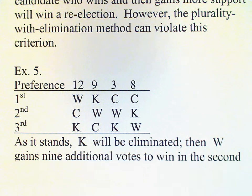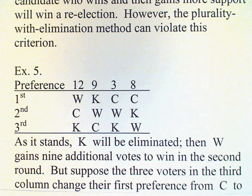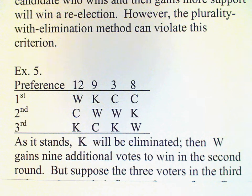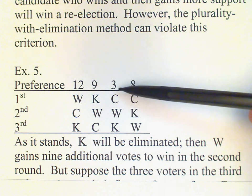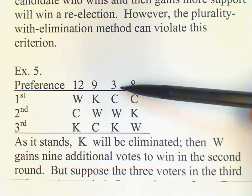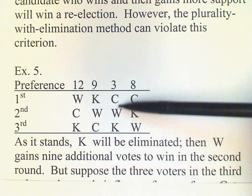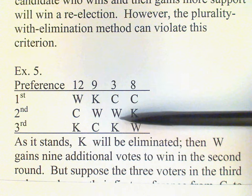In the original election, W wins. But now suppose these three voters have an idea of what's going to happen — they want to get on the winning side before it's too late — so they decide to change their vote from C to W.